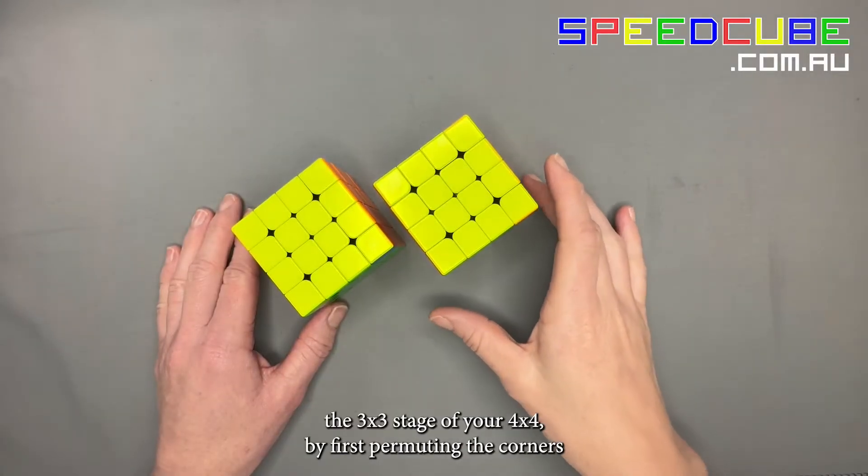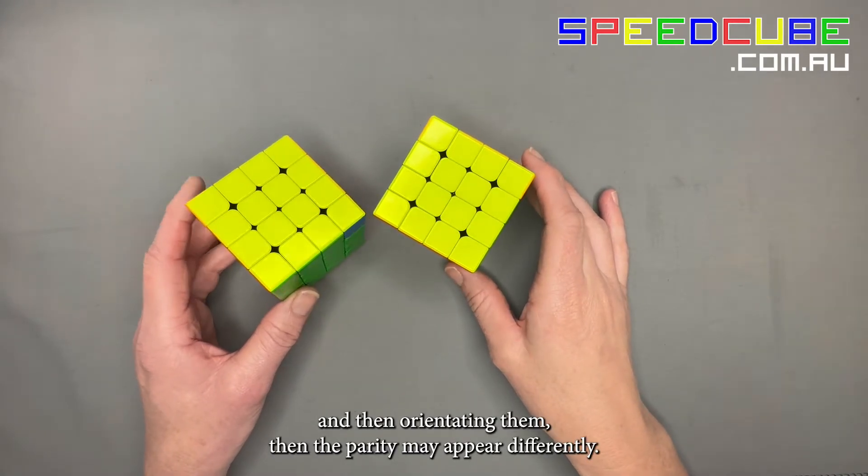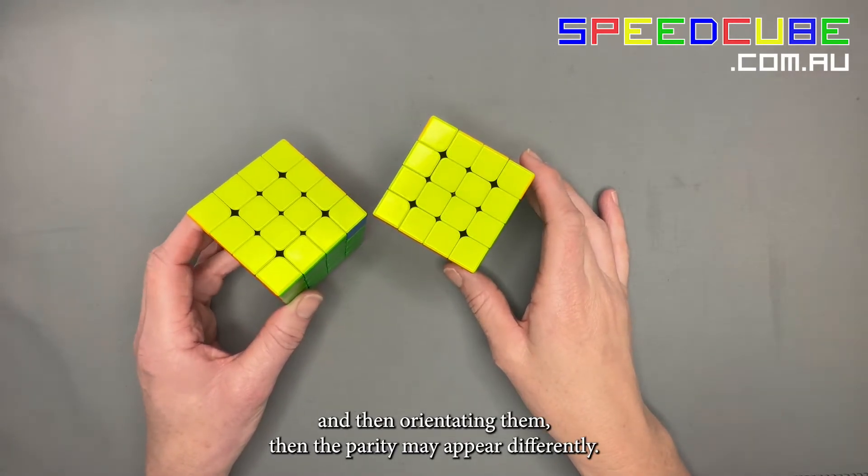If you are solving the 3x3 stage of your 4x4 by first permuting the corners, then orientating them, then the parity may appear differently.